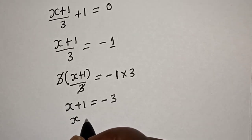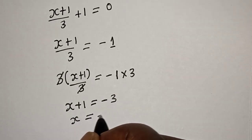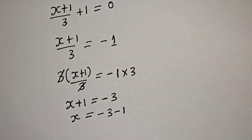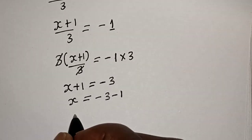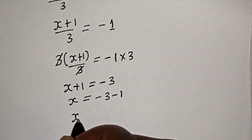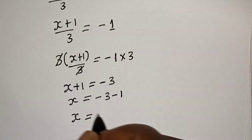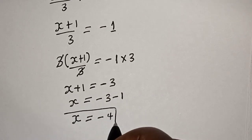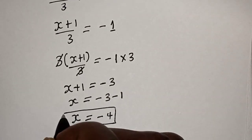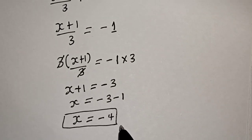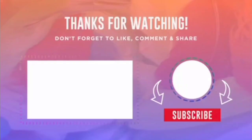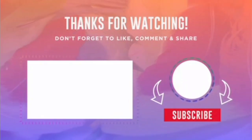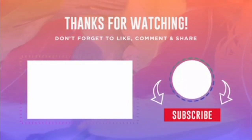So x is equal to minus 3 minus 1, therefore x is equal to minus 4. And that is our final answer. If you enjoyed the class, please don't forget to like, share, comment, and subscribe. Thank you.